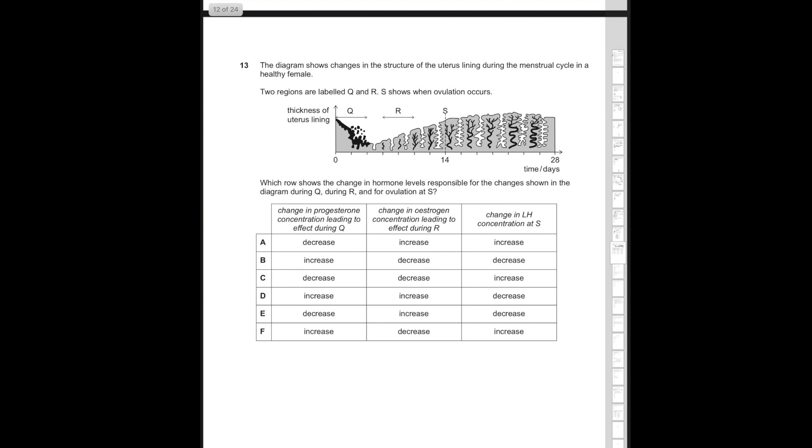Question 13. This one is simply a factual recall question. The diagram shows the changes in the structure of the uterus lining during the menstrual cycle in a healthy female. Two regions are labeled Q and R, and S shows when ovulation occurs. Which row shows the changes in hormone levels responsible for the changes shown in the diagram? Menstruation is caused by a decrease in progesterone, that's correct. Thickening of the uterus lining, that's going to be an increase in estrogen, that's also correct. What hormone causes ovulation? That's a spike in LH. That's correct. Therefore, the correct answer option is going to be A.